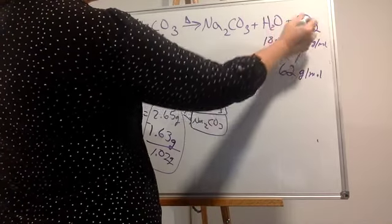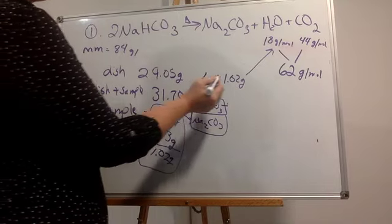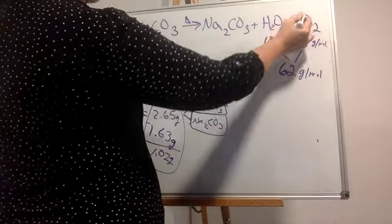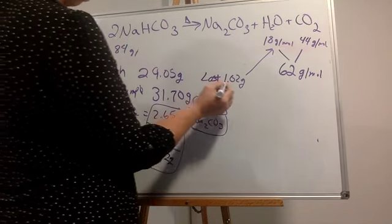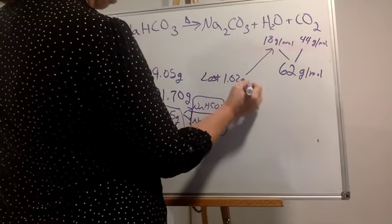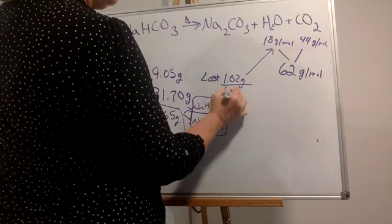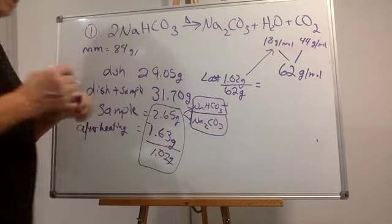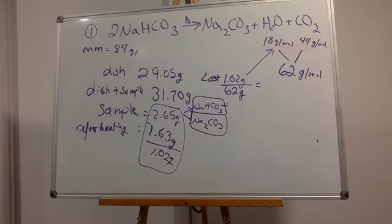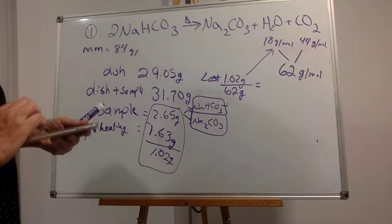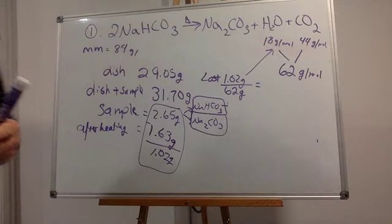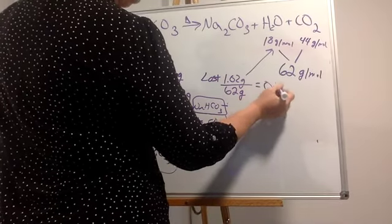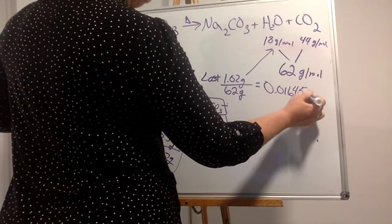That 1.02 grams is the water and carbon dioxide that was lost. I need to know how many moles were lost so I can calculate how many moles of baking soda I had to begin with. So I take the 1.02 grams and divide it by 62 grams per mole — 1.02 divided by 62 — and I get 0.01645 moles.